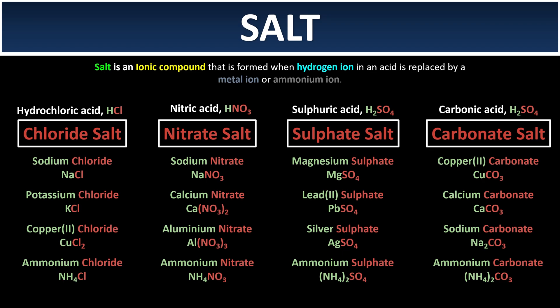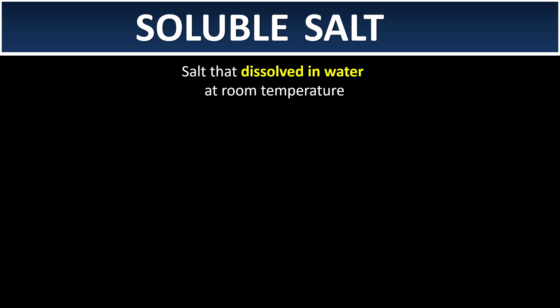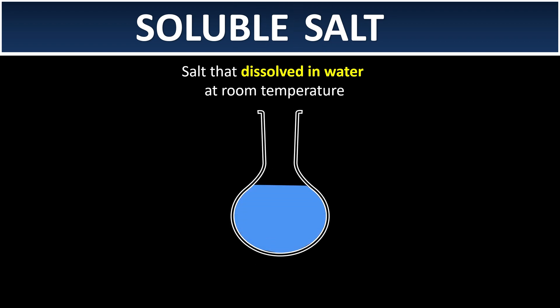Out of all these salts, they are categorized into two main categories. The first one is soluble salt — a salt that can dissolve in water at room temperature. If we fill a conical flask with water and add some salt, a soluble salt will dissolve at room temperature. But if we don't carry out an experiment, how do we know whether a salt is soluble or insoluble?